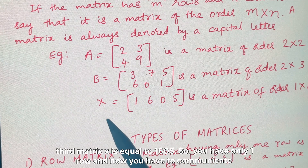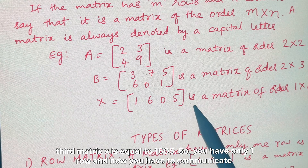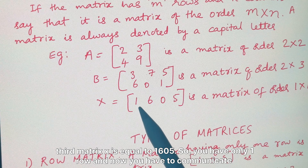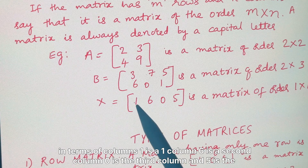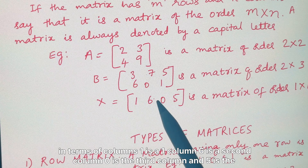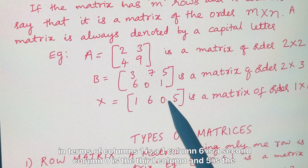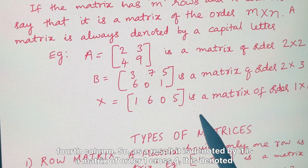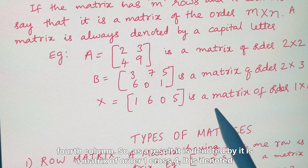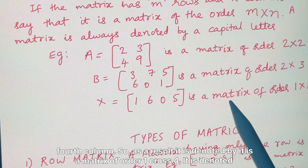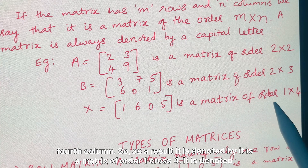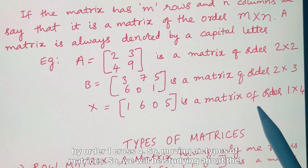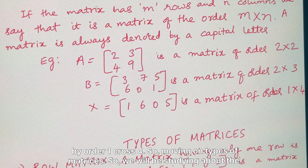The third matrix, X = [1 6 0 5], has only one row. In terms of columns: 1 is the first column, 6 is the second, 0 is the third, and 5 is the fourth column. So X is a matrix of order 1 cross 4.